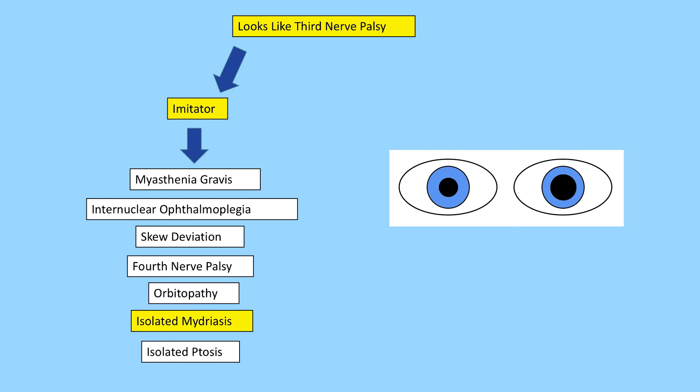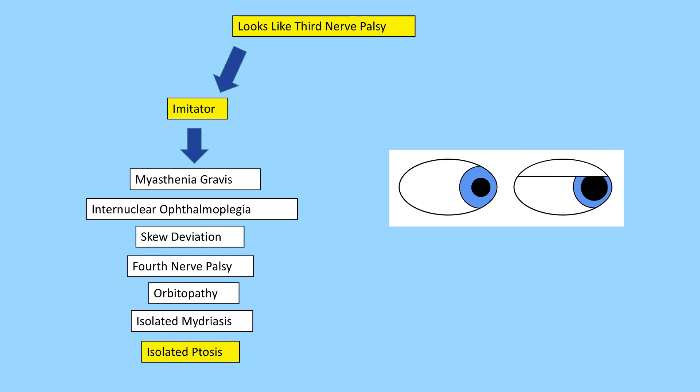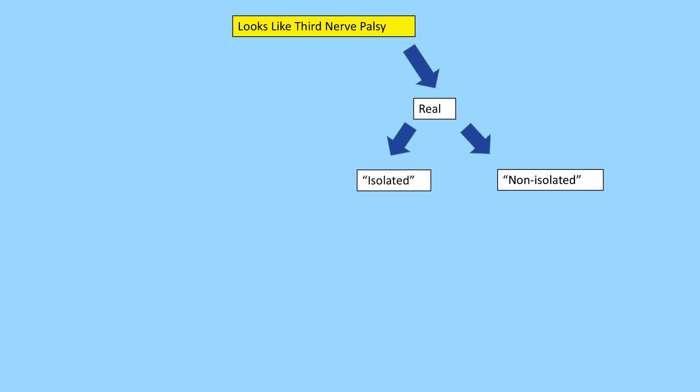Isolated mydriasis is not a manifestation of a third nerve palsy, though it causes widespread alarm. To diagnose a third nerve palsy, expect to find ptosis or ocular ductional deficits. Isolated mydriasis should be attributed to prior damage to ciliary nerves or iris, or pharmacologic agents blocking neural transmission to the iris sphincter or activating the iris dilator. Isolated ptosis also wrongly prompts consideration of third nerve palsy — such a diagnosis would only work if there were overlooked ductional deficits. If you confirm a real third nerve palsy, determine if it is isolated or non-isolated.